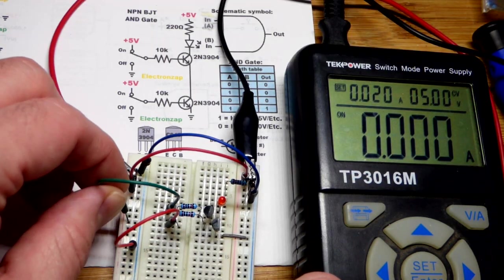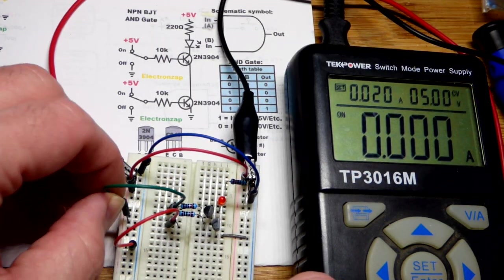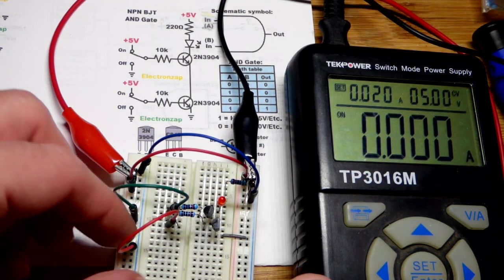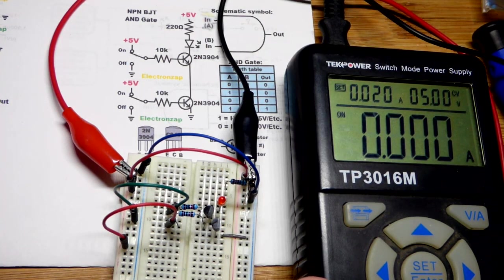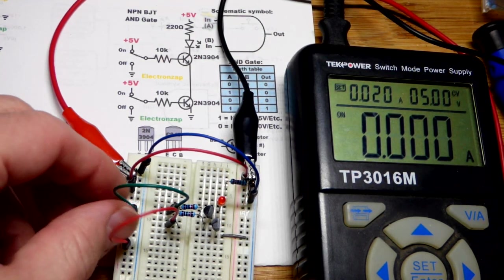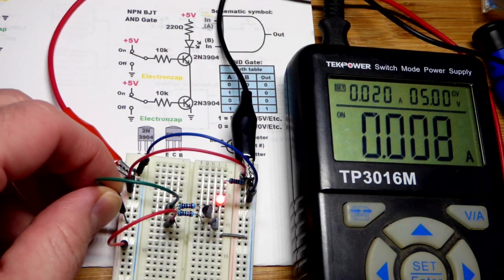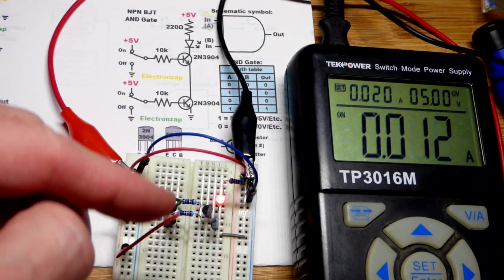It's off. So if I put one jumper to the positive supply, the LED stays off. They're both to the negative supply now. If I put the other one to the positive supply, the LED is completely off, right there.